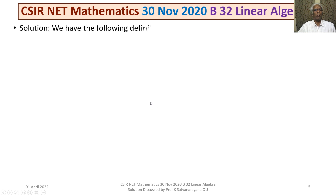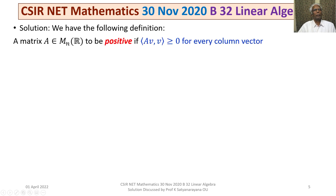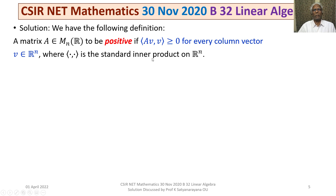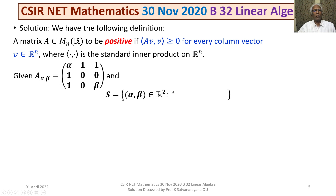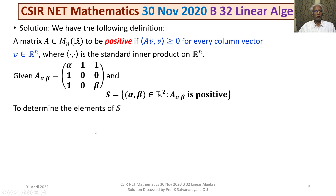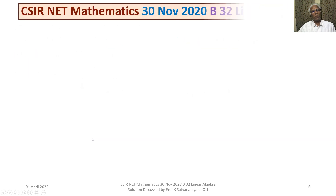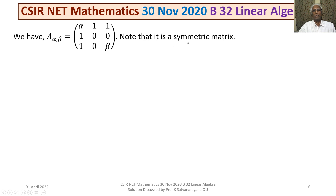Let us now discuss the solution. We have the definition given: a matrix A in M_N(R) is positive if the inner product ⟨Av, v⟩ ≥ 0 for every column vector V in R^N, using the standard inner product. The matrix A(α,β) is given, and S is the set of all ordered pairs (α, β) in R² such that A(α,β) is positive. We observe that A(α,β) is a symmetric matrix.